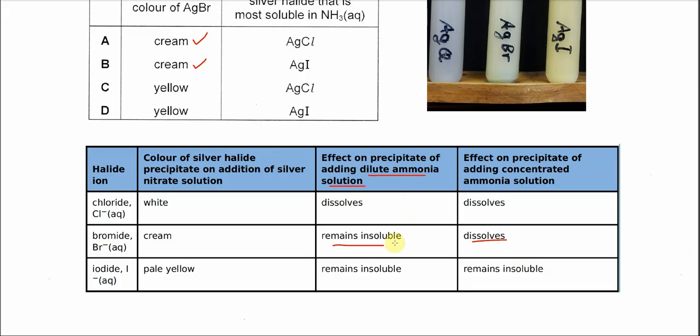Now for silver iodide, when we put dilute ammonia solution and concentrated ammonia solution, it remains insoluble. So it has the lowest solubility in ammonia compared to the previous two.